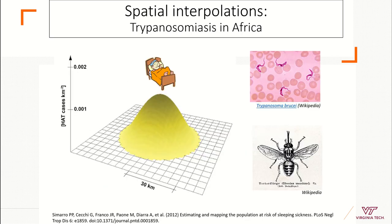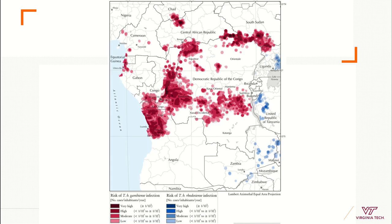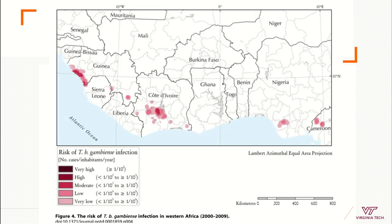We still use these interpolation-based methods — for example, for trypanosomiasis in Africa, which is a vector-borne disease. In this case, the authors estimated how far a vector can fly to estimate the risk of transmission around a given area. They were able to make maps identifying high and low risk based on that information, ending with a map showing areas with high and low risk of transmission.